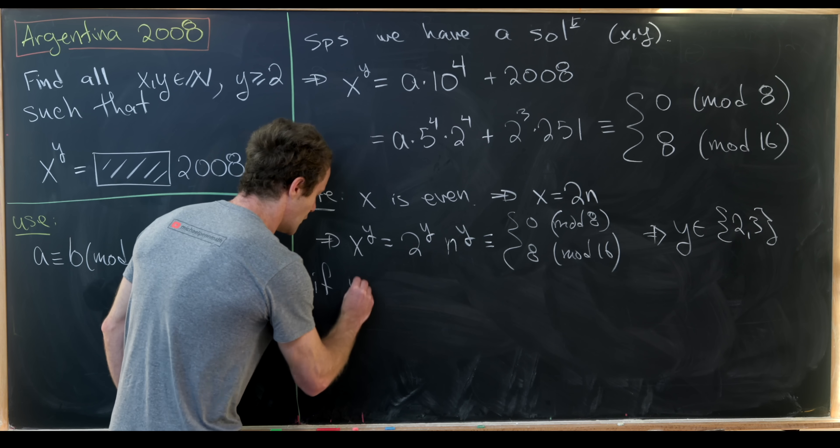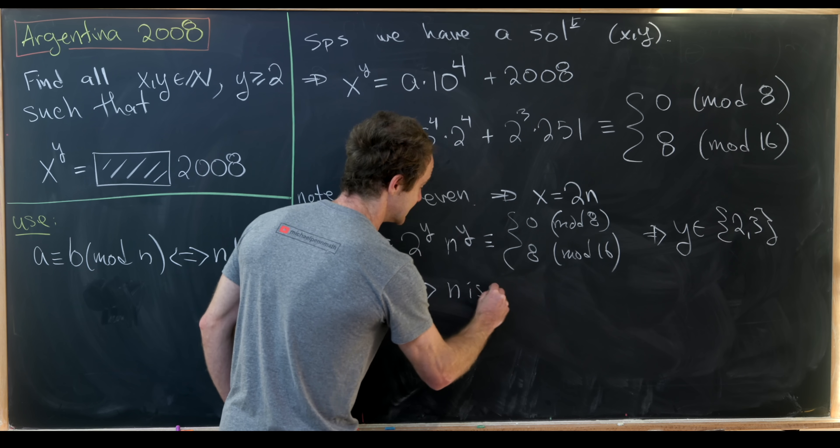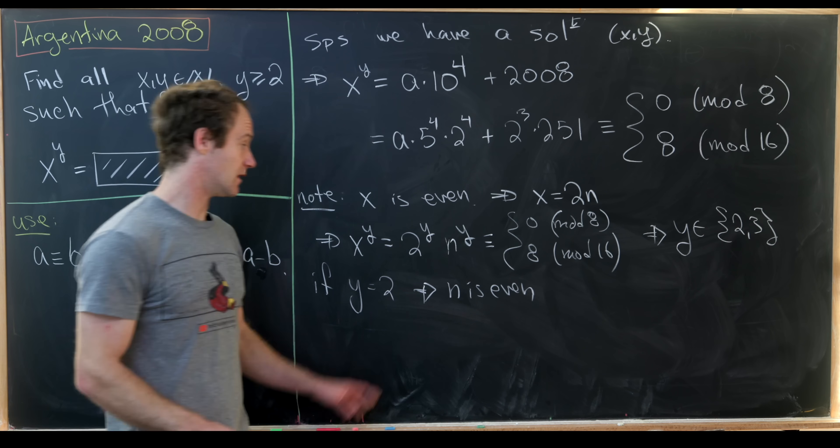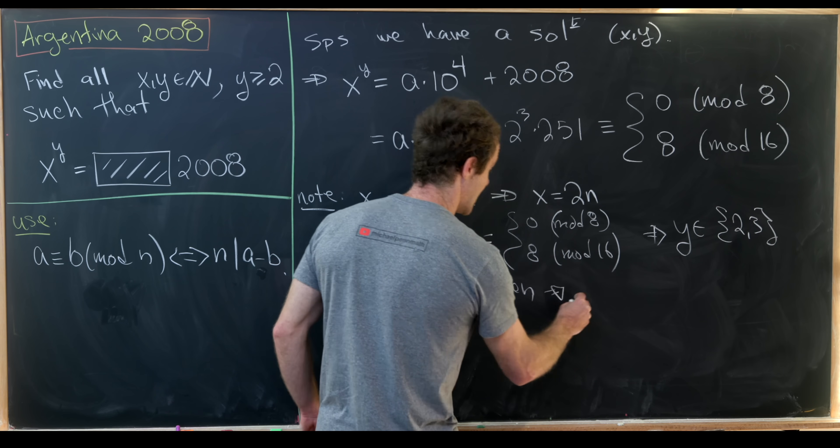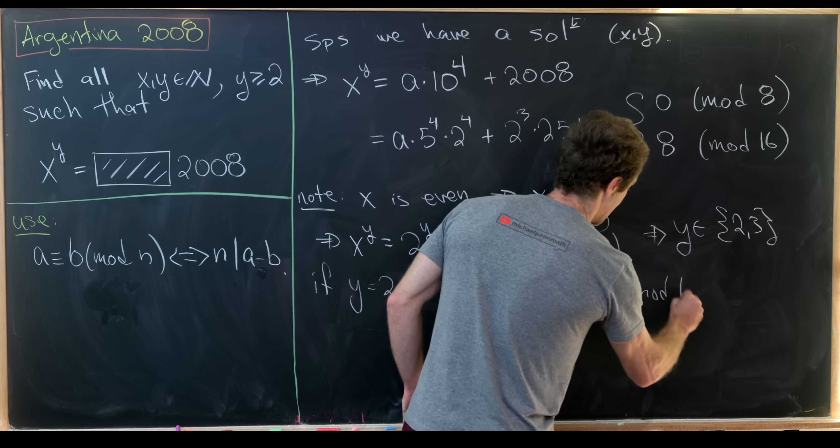But notice if y is equal to 2 then that implies that n is even as well. But if n is even as well then that will imply that x to the y is congruent to 0 mod 16.